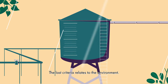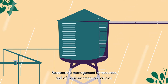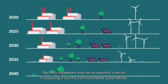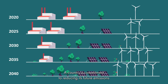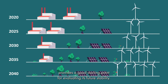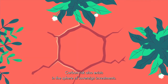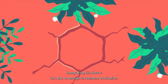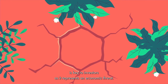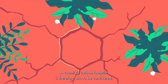The last criteria relates to the environment. Responsible management of resources and of the environment are crucial. The Paris Agreement may be an essential criterion in assessing a country's environmental sustainability. A country's commitment to reducing its future emissions provides a good starting point for evaluating its future stability. Carbon risk also exists in the sphere of sovereign investments, and integrating this factor is key as it represents an economic threat. A country's carbon footprint is therefore also to be considered.